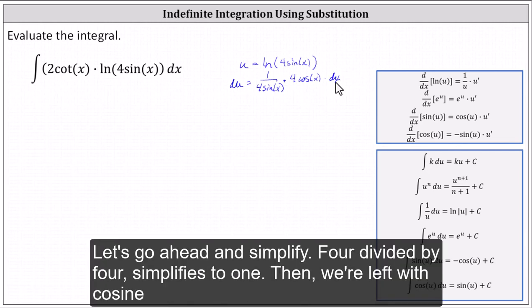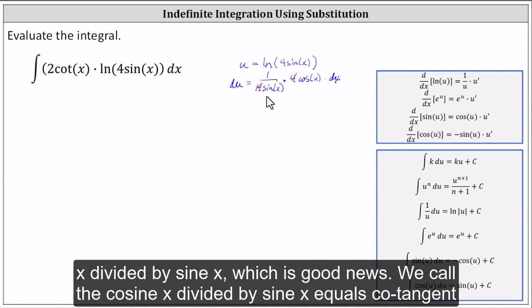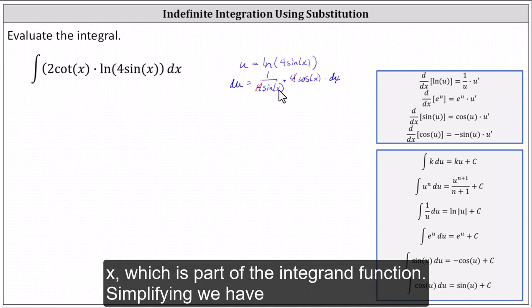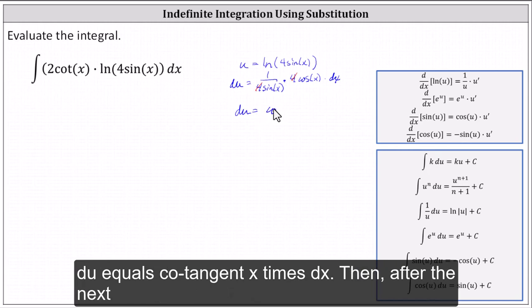And then we have times dx. Let's go ahead and simplify. Four divided by four simplifies to one, and then we're left with cosine x divided by sine x, which is good news. Recall that cosine x divided by sine x equals cotangent x, which is part of the integrand function. Simplifying, we have du equals cotangent x times dx.